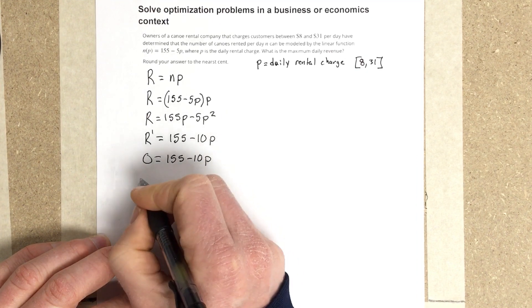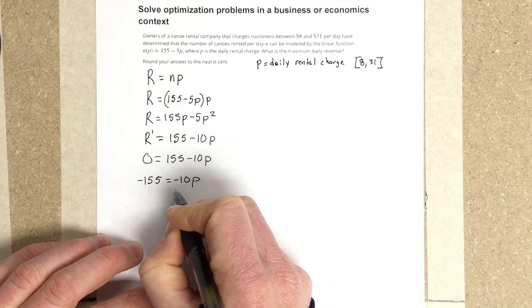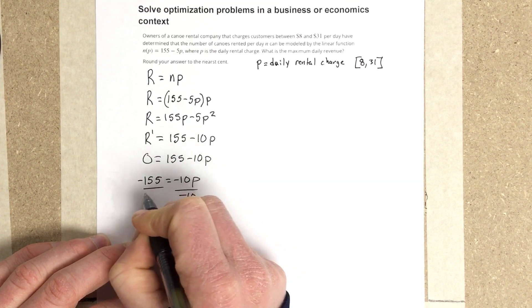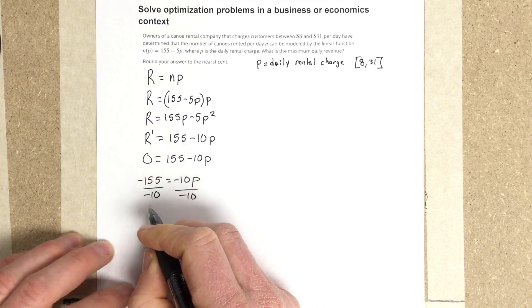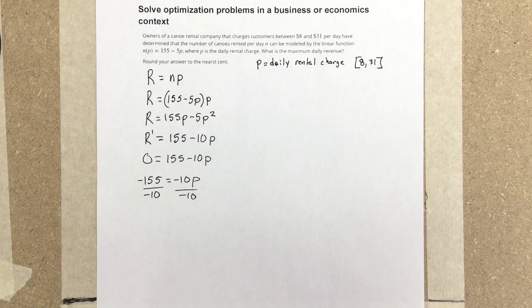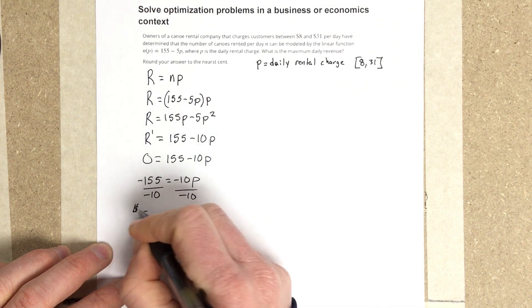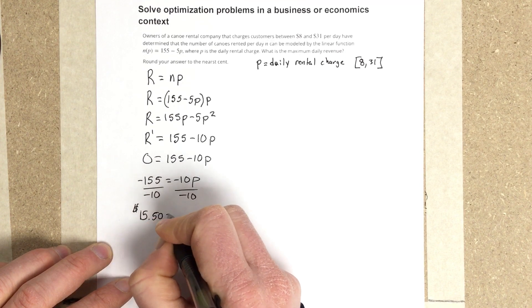We subtract the 155, so negative 155 equals negative 10P. And we divide by negative 10 on each side, and it tells us our price needs to be $15.50 for our rental price.